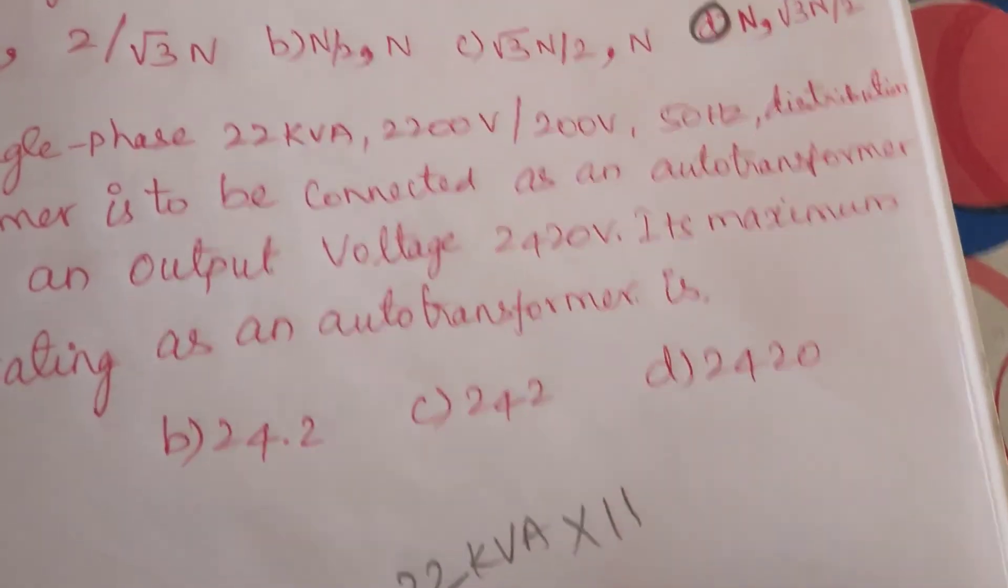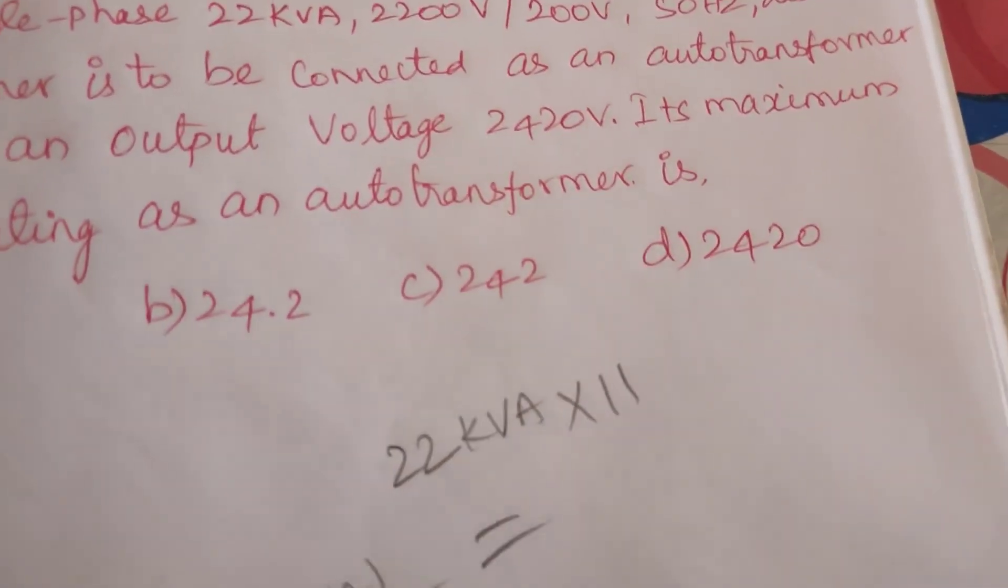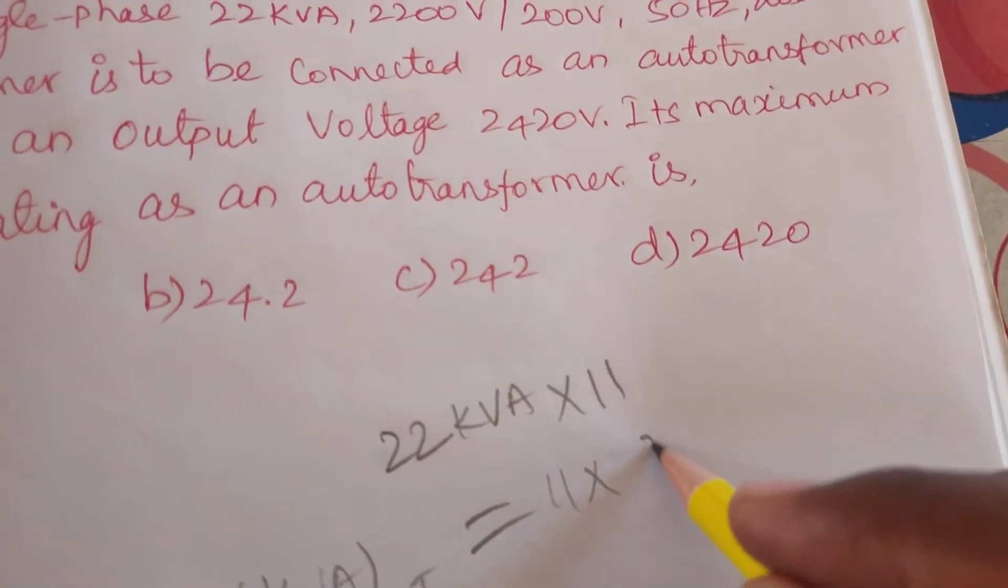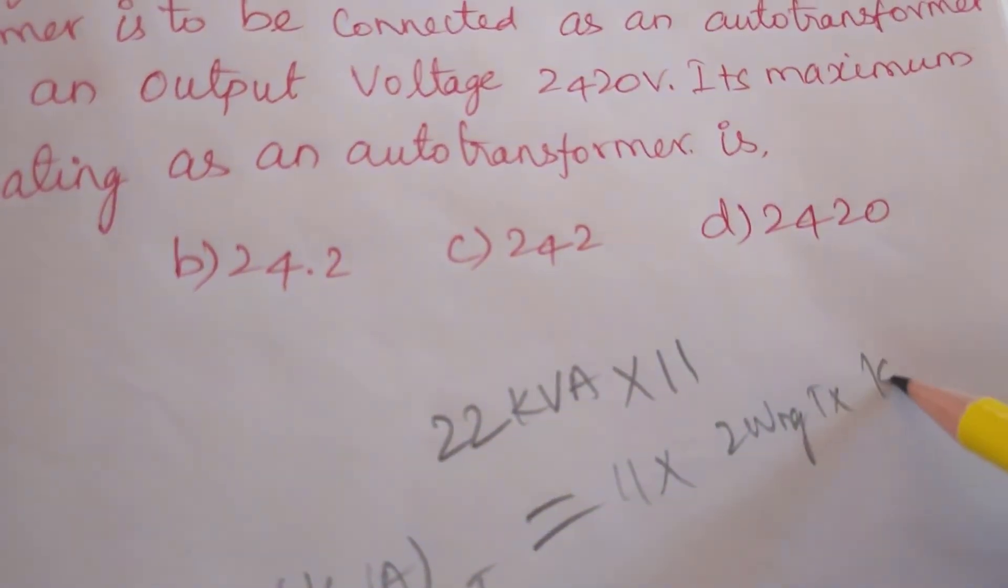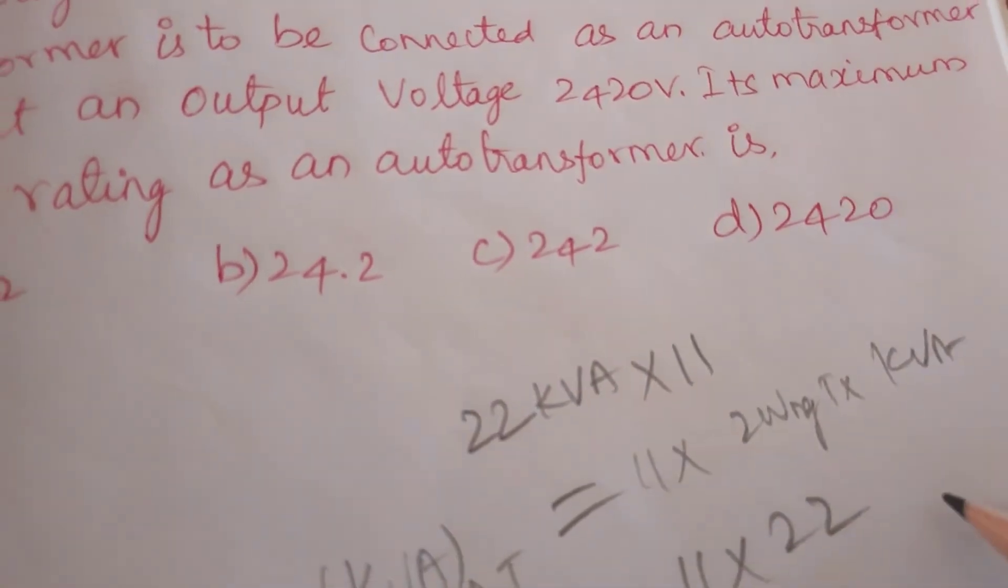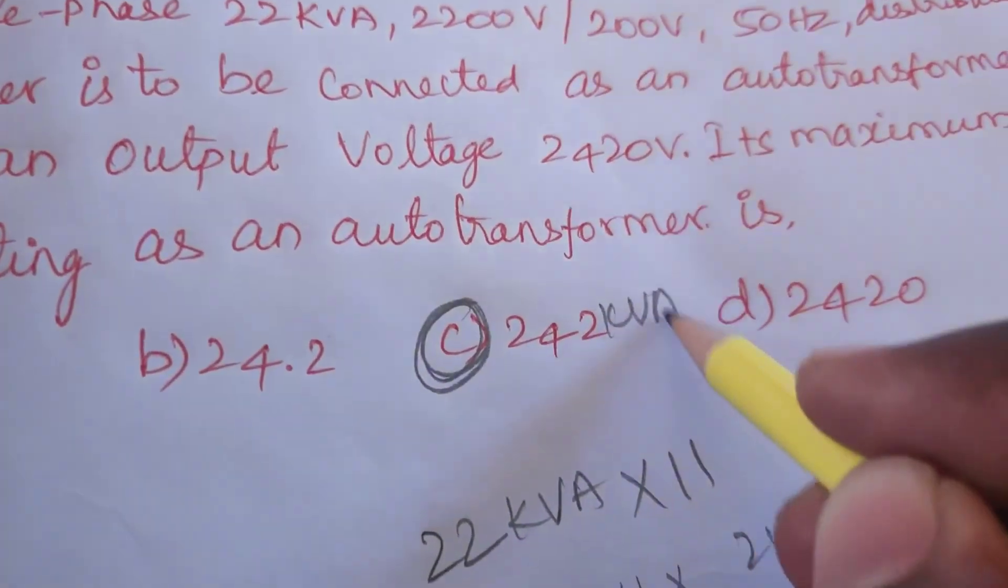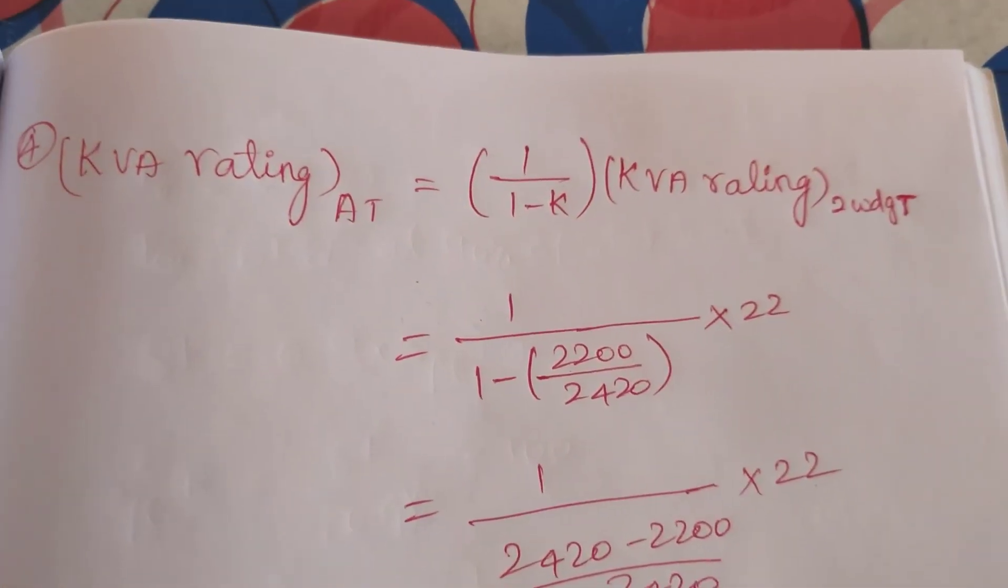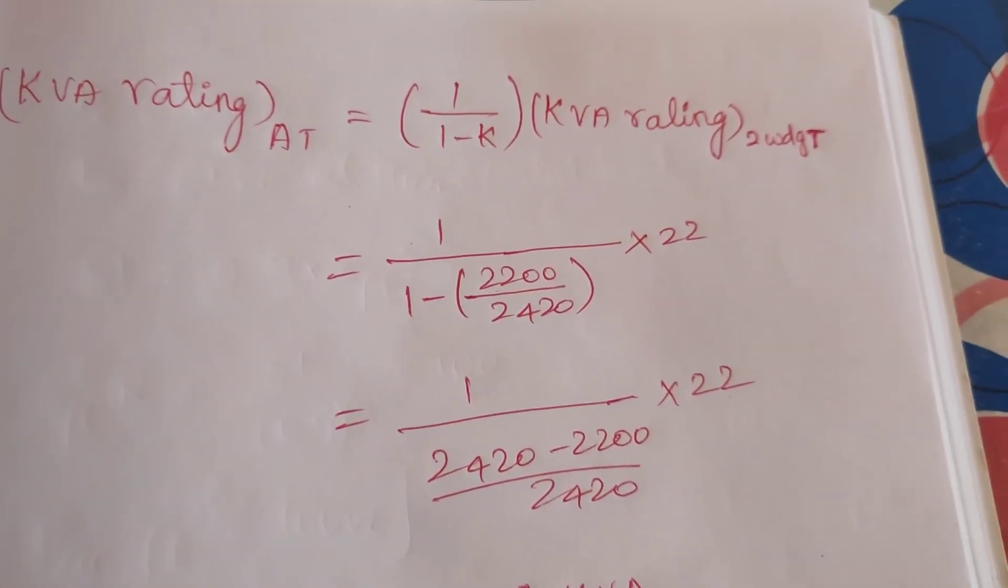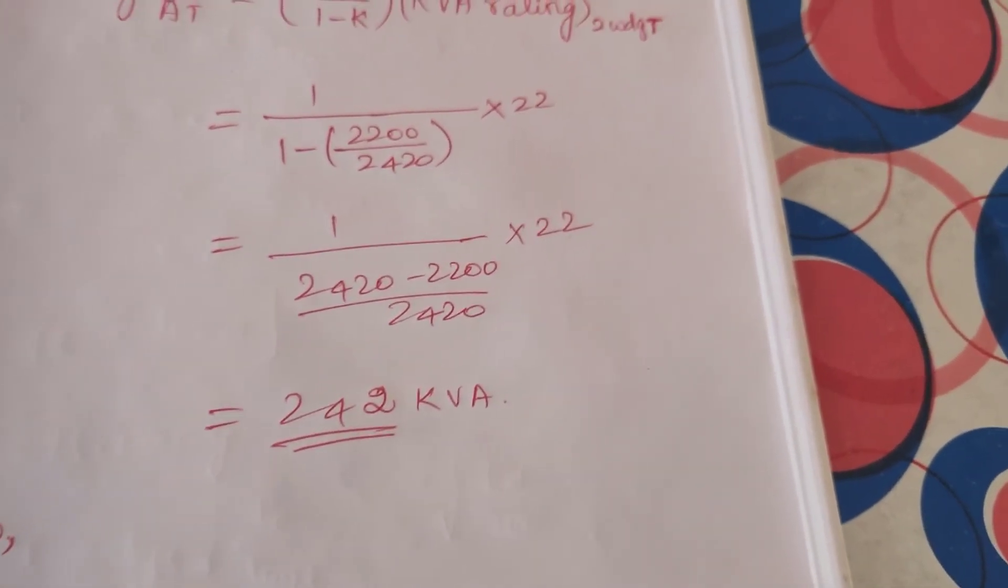Auto transformer kVA is equal to 11 into two winding transformer kVA. So 11 into 22 we will get 242 kVA. Or otherwise the formula: kVA rating auto transformer is equal to 1 by (1 minus k) into kVA rating of two winding transformer. So we will get 242 kVA.